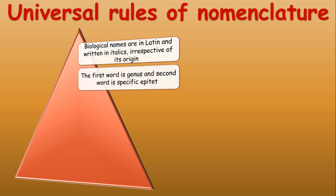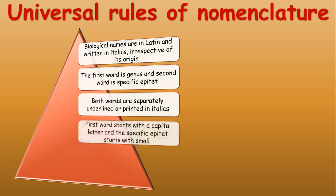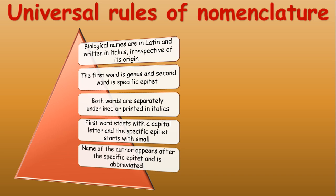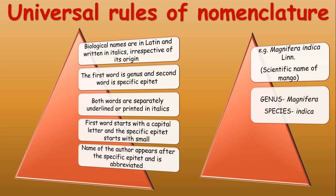Biological names are in Latin and written in italics irrespective of origin. The first word of the biological name is the genus and the second word is the specific epithet. Both words are separately underlined or printed in italics. The first word starts with a capital letter and the specific epithet starts with a small letter. The name of the author appears after the specific epithet and is always abbreviated.